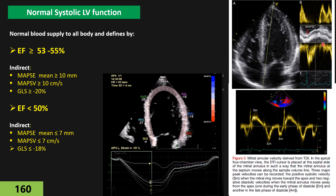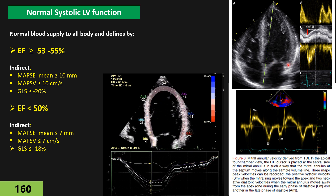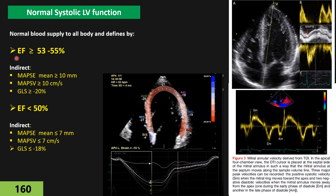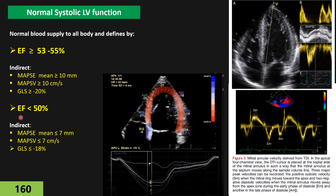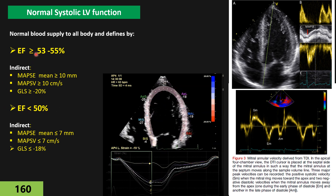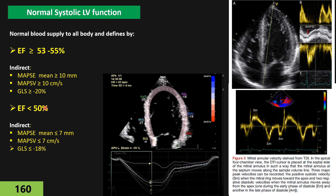As you know, MAPSE on the medial annulus is usually less than MAPSE on the lateral annulus. As you can see here, there is a gap between those two — between EF 50 and 53% — where there is still no consensus on which category those patients belong to.